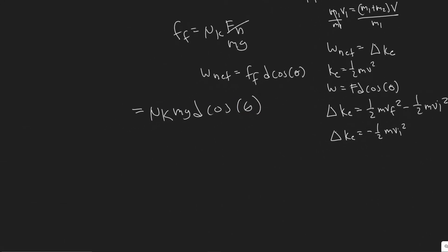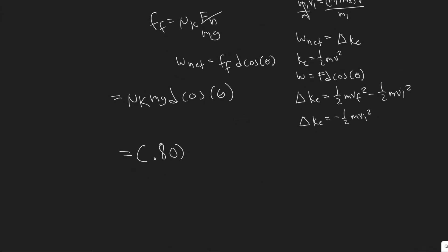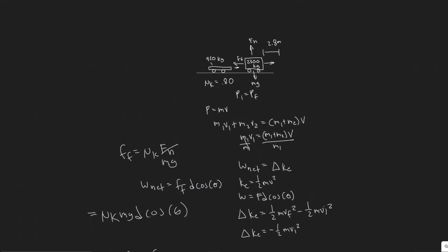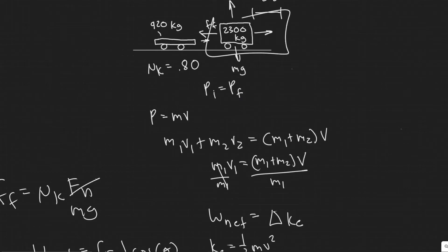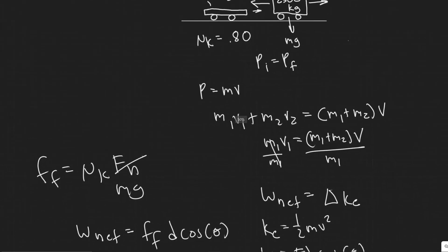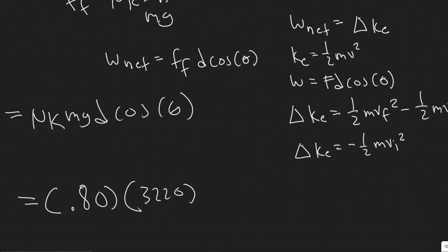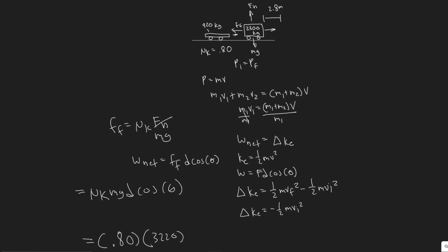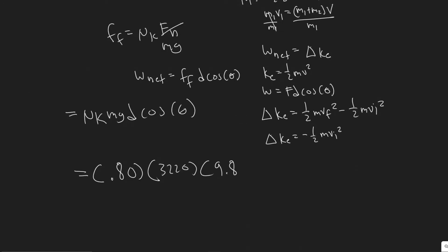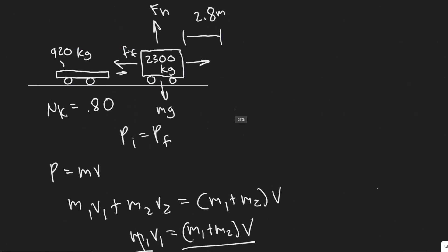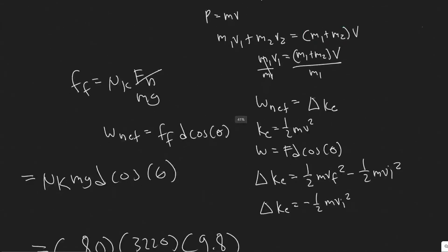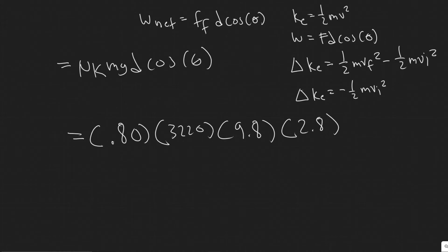Now we plug in the numbers. Mu_k is 0.8. The mass is them added up — 2300 plus 920 equals 3220 kg — because the force of friction acts on them when they're combined. G is 9.8 m/s². The distance d is 2.8 meters, which is how far they travel after impact.